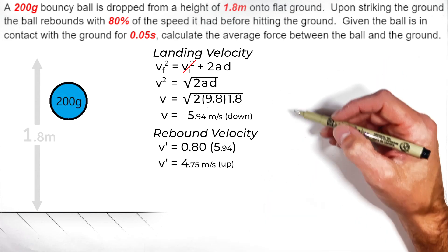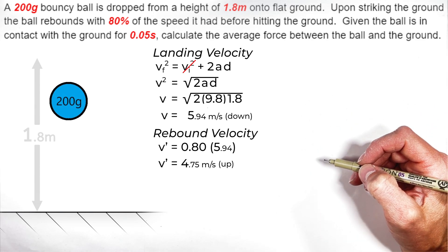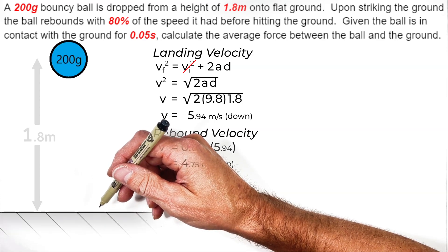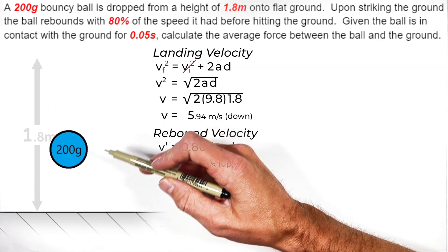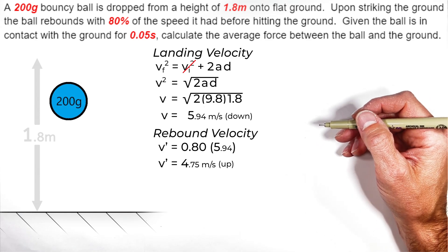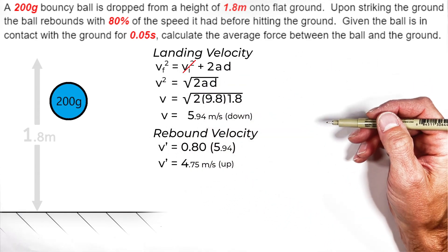Now, there's an issue here that's responsible for the mistake that people typically make in this problem. You see, if we say the ball is moving downward at 5.94 meters per second, and then later it's moving at 4.75 meters per second, we've missed out on one of the most important ideas separating velocity from speed, and that is that direction matters.